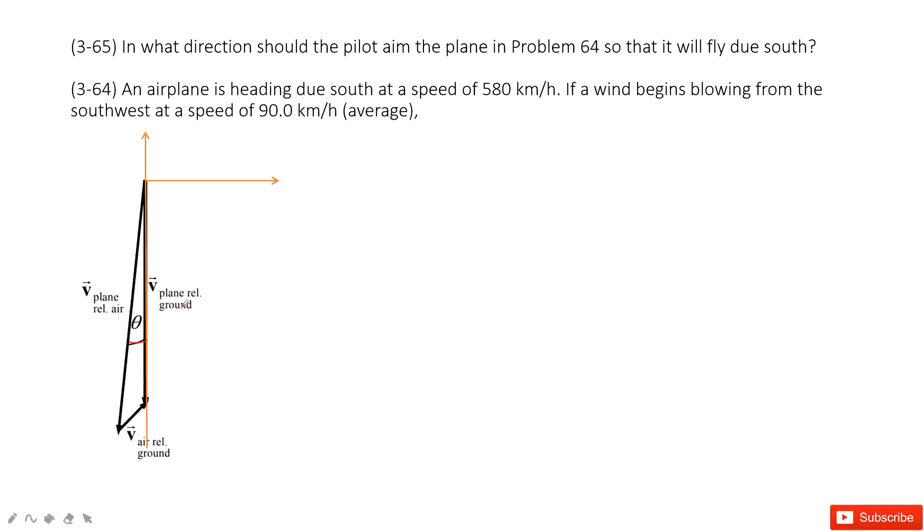So in this one we can see, we have three vectors. First one is the velocity airplane to the air, and then the velocity air to the ground, and the velocity plane to the ground. So in this one we find the relative velocity equation. The velocity plane to the ground should equal to the velocity plane to the air plus velocity air to the ground. Do you agree?